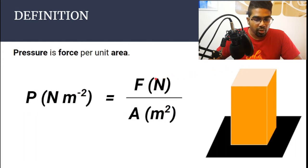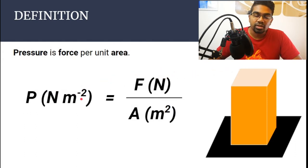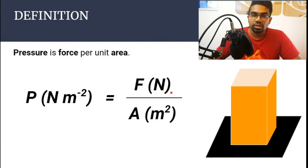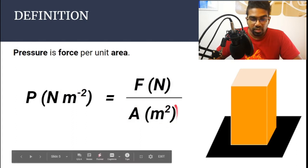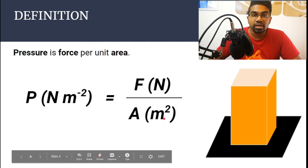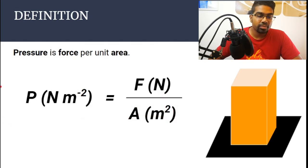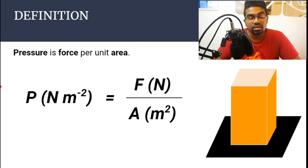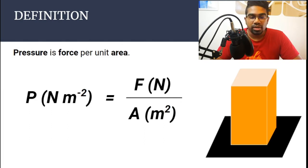The units for pressure normally used are newtons per meter squared. This is when force is in newtons and area is in meter squared, so it is newtons per meter squared. There are many other units for pressure when you study pressure in liquids and air pressure, but we will not be discussing those units here.